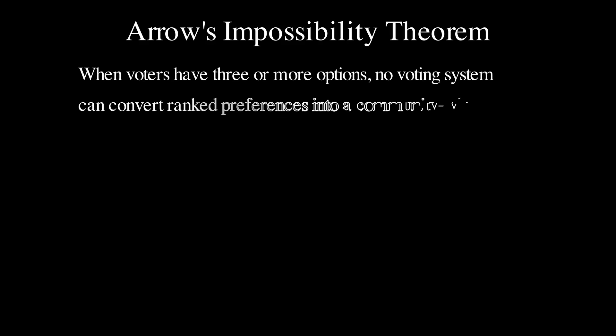Arrow's impossibility theorem is a result that delivers a surprising verdict on the nature of ranked voting systems that satisfy certain criteria. This theorem, which was introduced by economist Kenneth Arrow in the 20th century, says that when voters have three or more options, no voting system can convert the ranked preferences of individuals into a community-wide ranking while meeting Arrow's conditions.